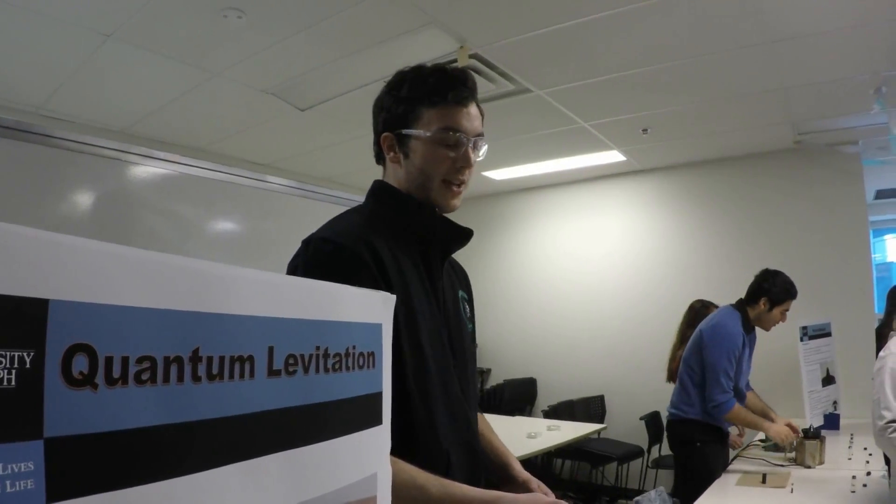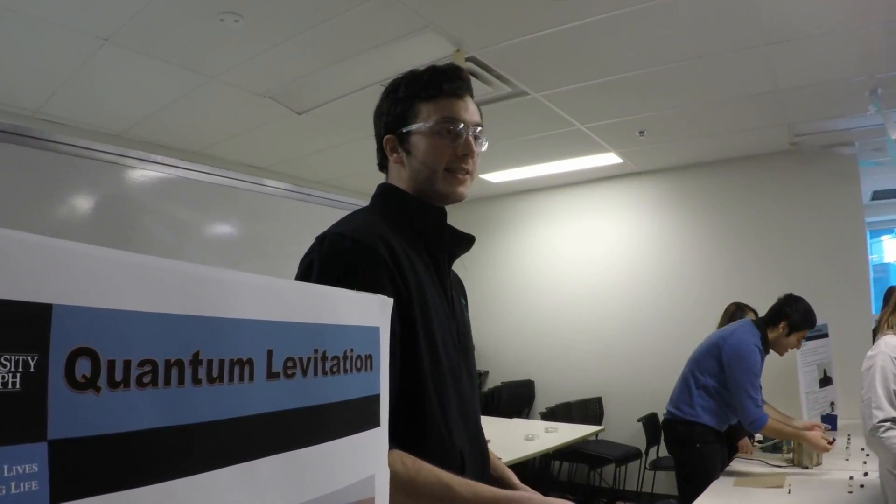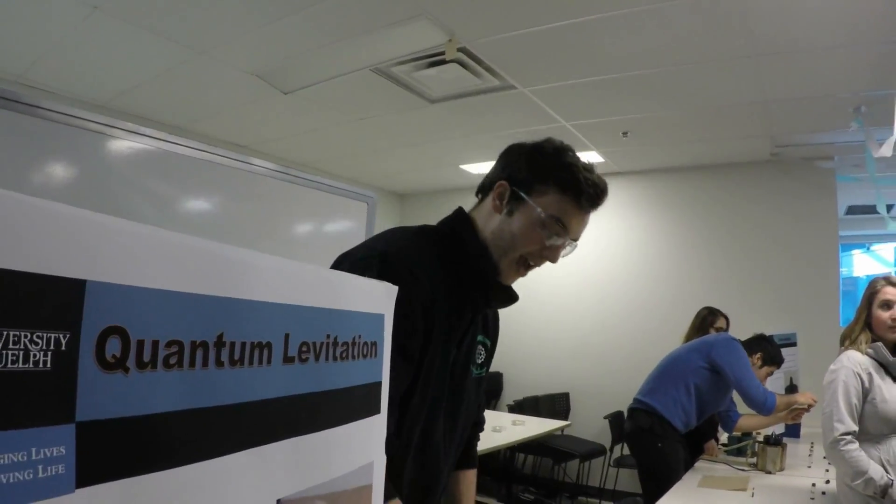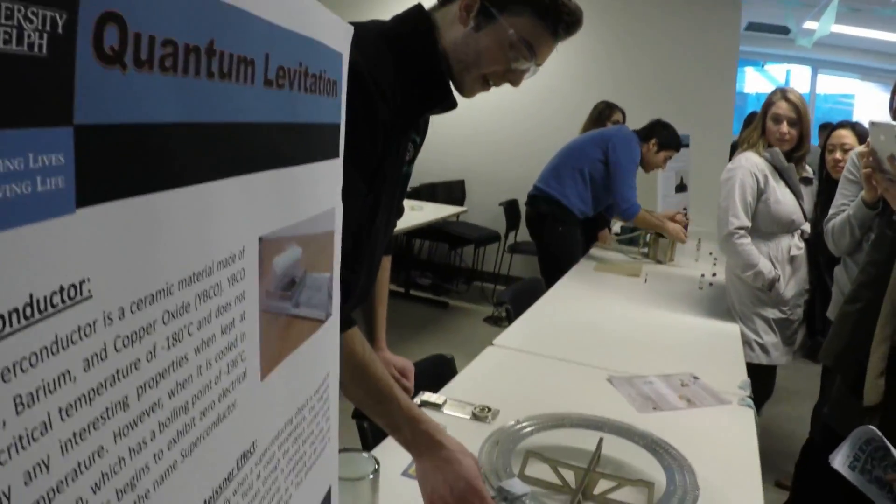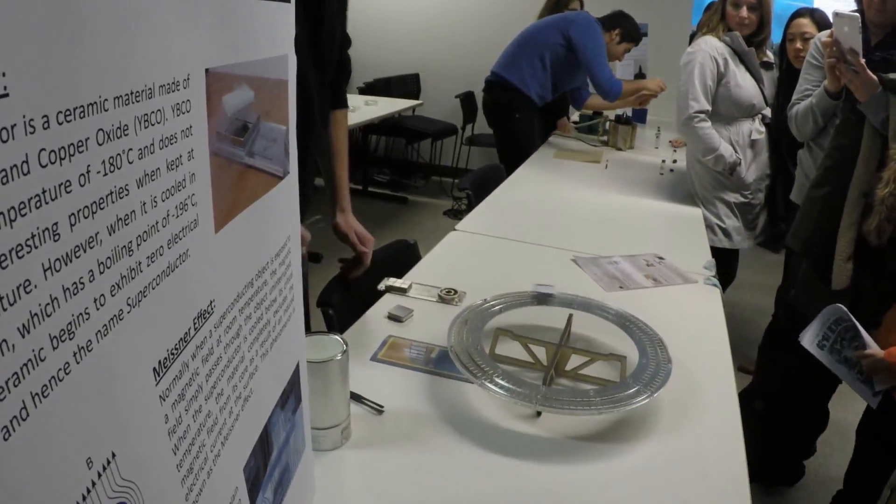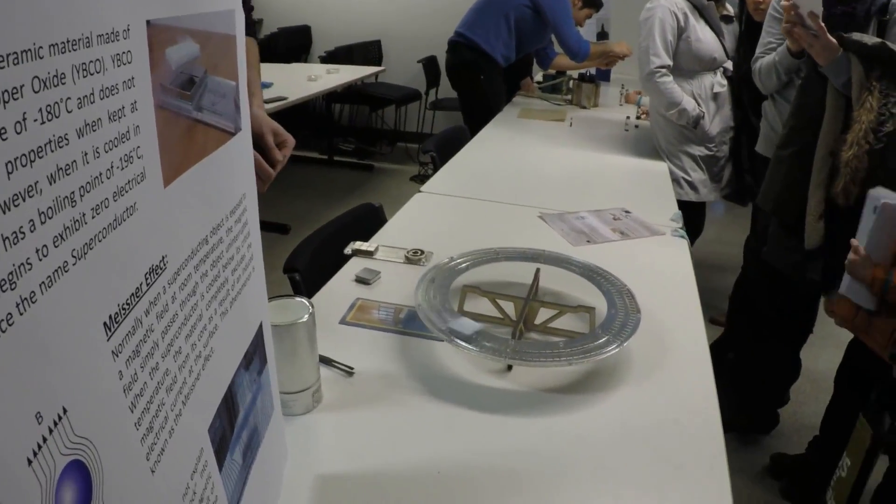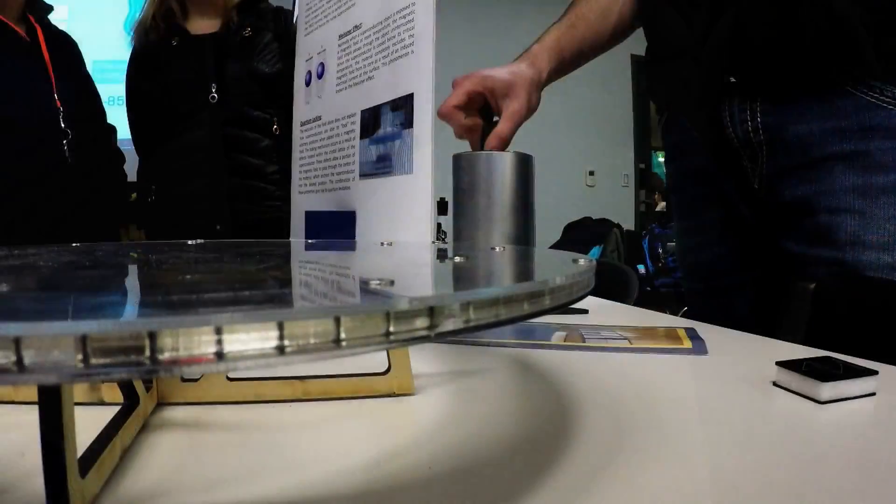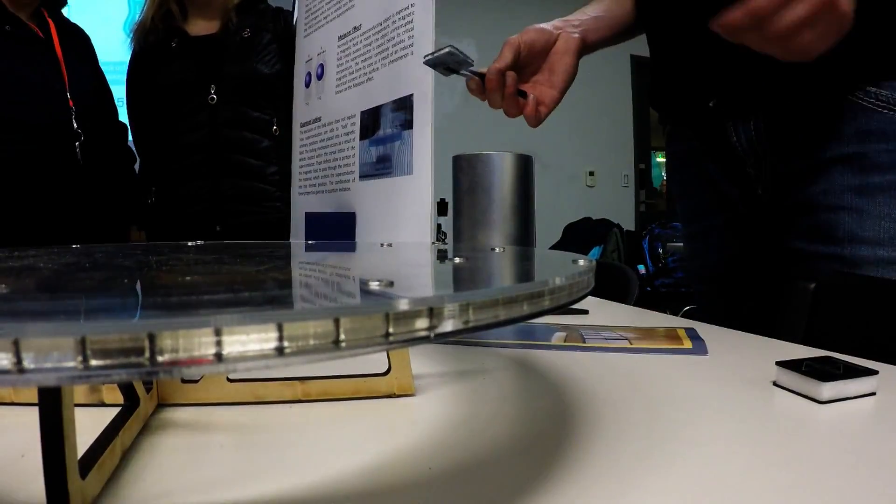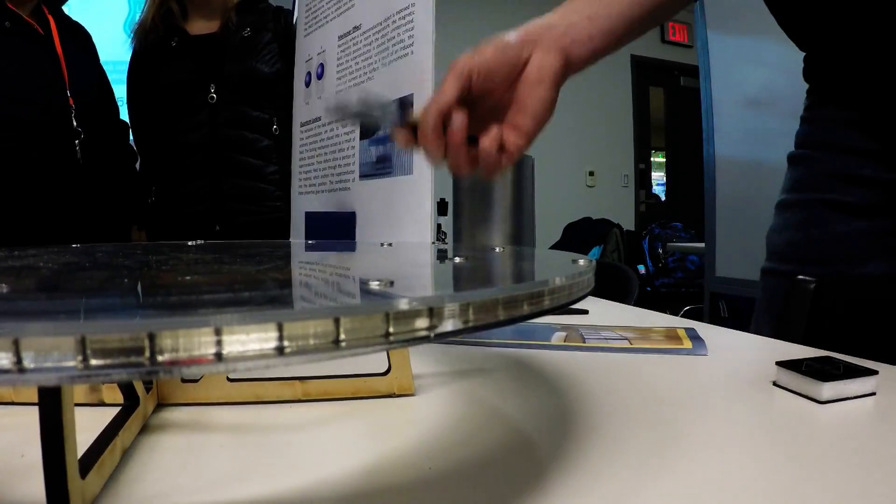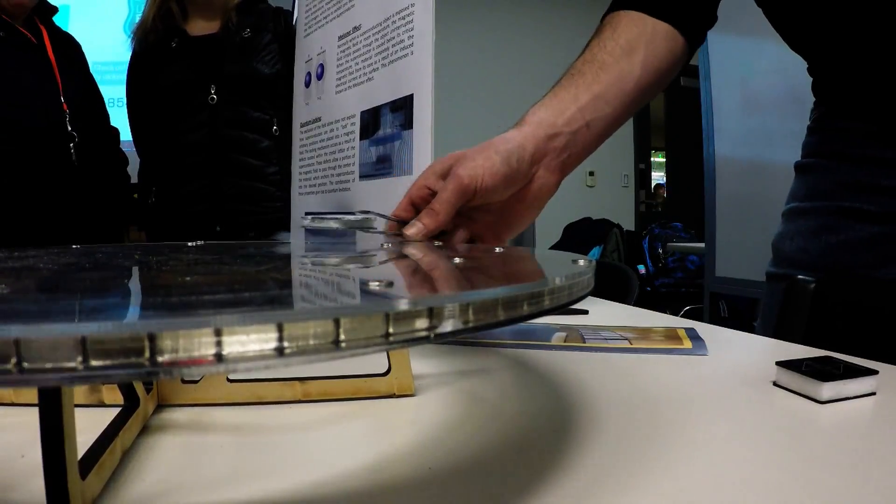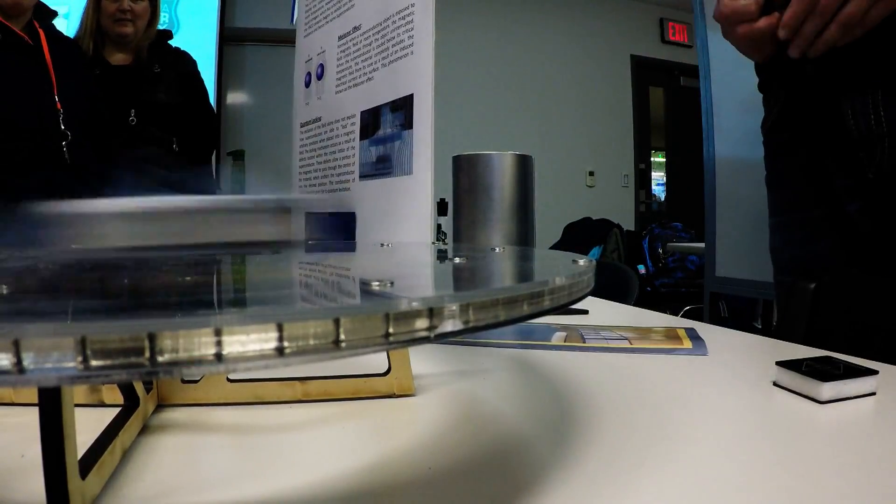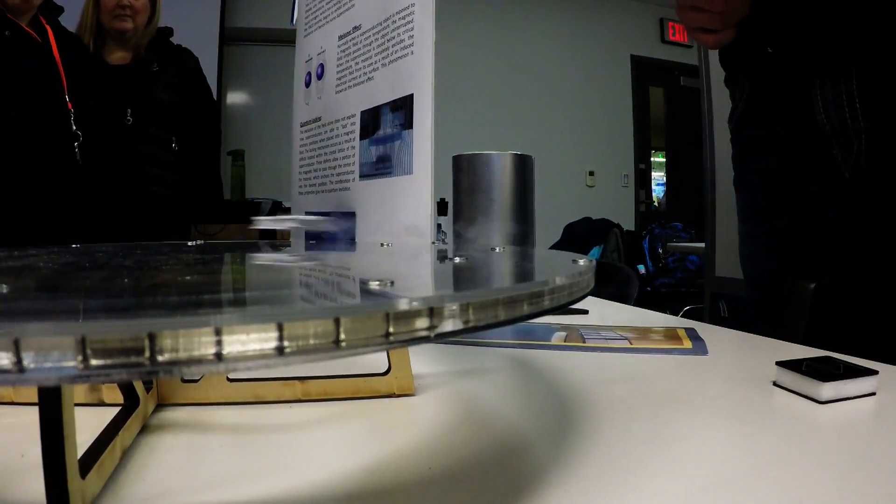I have a superconductor that's been cooled to negative 196 degrees Celsius, and when I place it in a magnetic field, it will levitate above that magnetic field and be locked in a position. You could literally just pile your bathroom with this and you wouldn't know the difference. It's just a ceramic, but these properties are seen when it's at its critical temperature of negative 180 degrees.